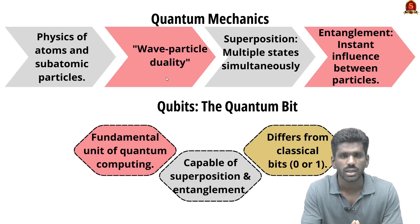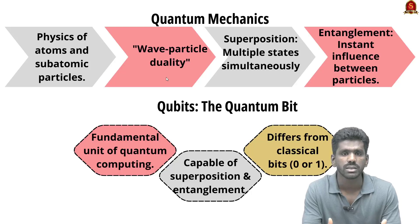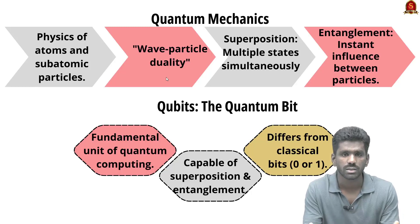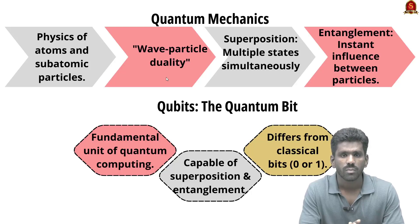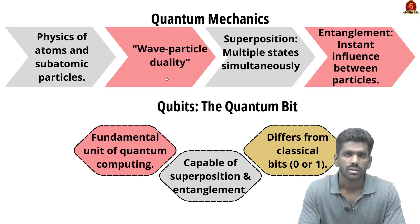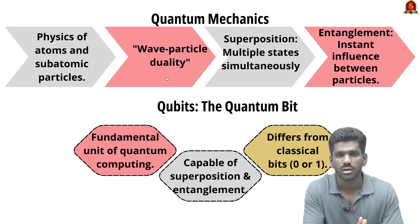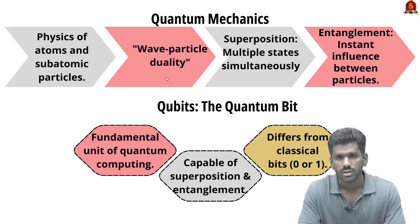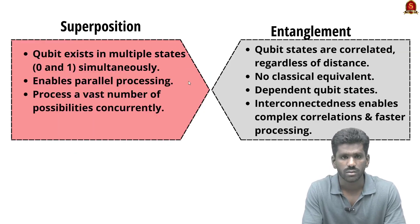Superposition means particles can exist in multiple states at once. Entanglement means particles can influence each other instantly regardless of distance — even if placed at both ends of the universe, they still affect one another. A particle can exist in a wave-like or particle-like state simultaneously. These particles are fundamental to quantum computing.